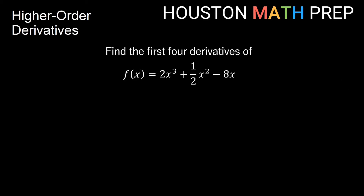Let's do some examples of finding higher order derivatives. We want to find the first four derivatives of f(x) = 2x³ + ½x² - 8x. Our first derivative, f prime of x, uses power rules. The 3 comes out front giving us 6, power goes down by 1 giving 6x². For the next term, 2 times ½ equals 1, so we just write x. The derivative of -8x: the 1 comes out front, power goes to x⁰, so this just becomes negative 8. So our first derivative is 6x² + x - 8.